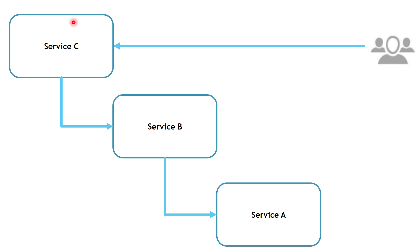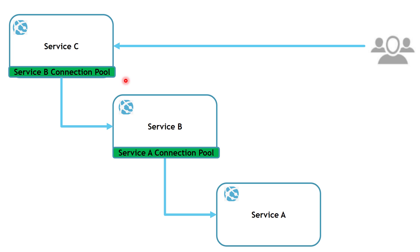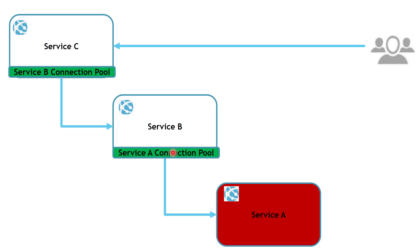What we are going to do is implement a connection pool in Service C. This connection pool is going to be allocated a particular number of SNAT ports, and it will be dedicated for all communications with Service B. Similarly, we are going to implement a connection pool in Service B that's responsible for all communication with Service A, and allocate a particular number of SNAT ports for this connection pool. When Service A goes down, all of the SNAT ports allocated in the Service A connection pool will be used trying to reach Service A, leaving the rest of Service B's SNAT ports and resources free to perform other operations. This is our bulkhead that stops the damage.